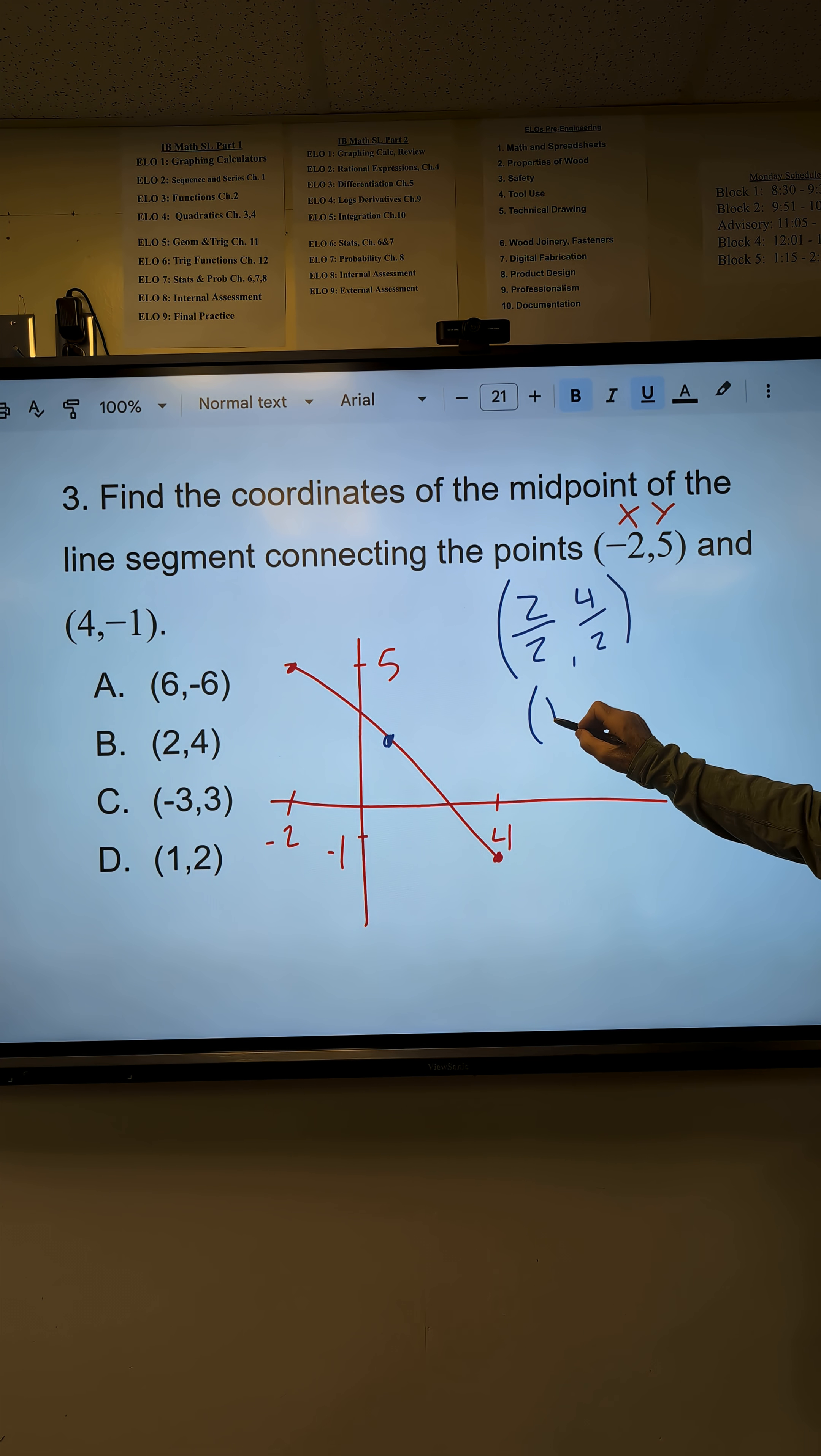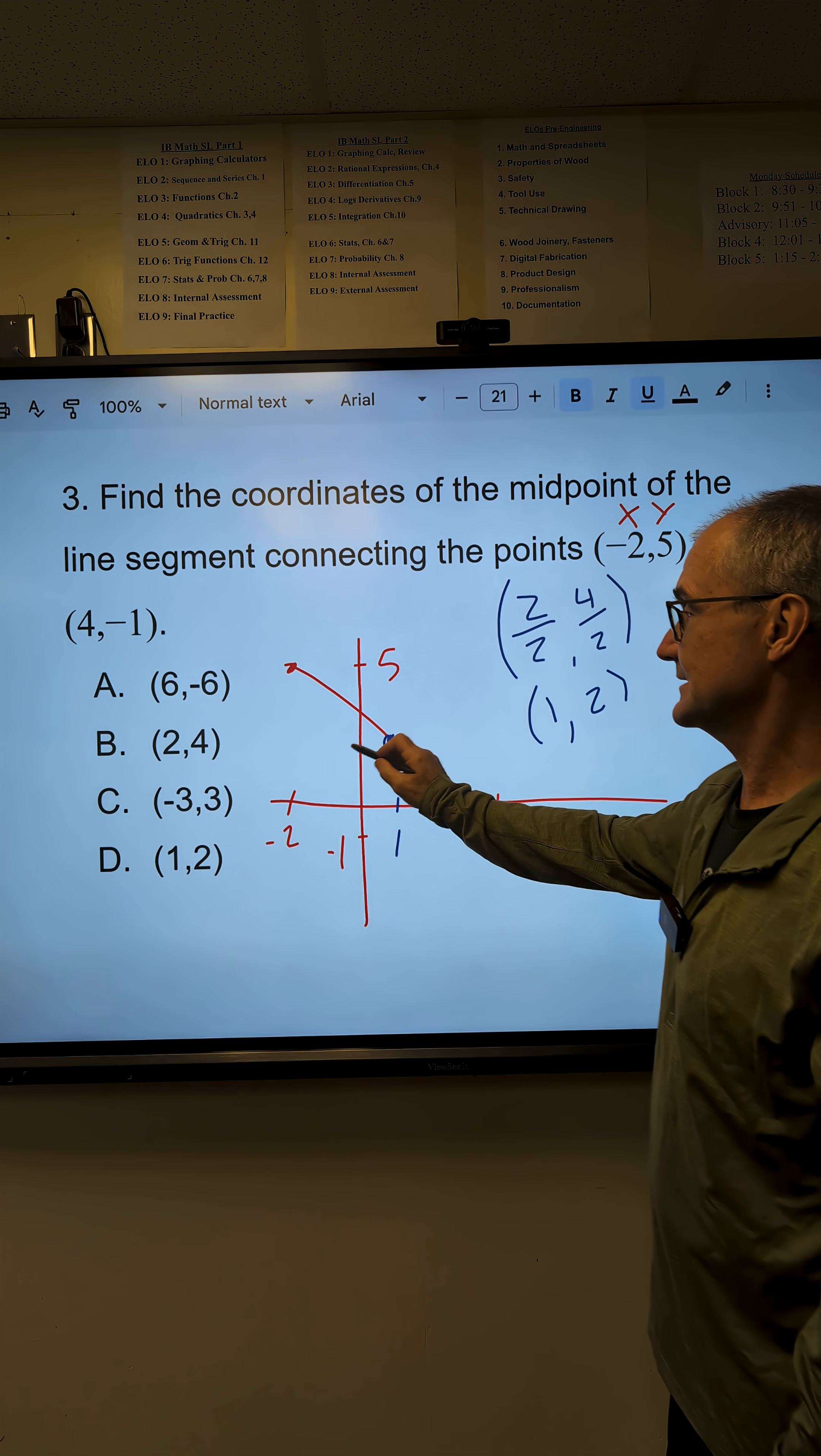So 2 over 2 is equivalent to 1. 4 over 2 is 2. My midpoint is over 1, up 2.